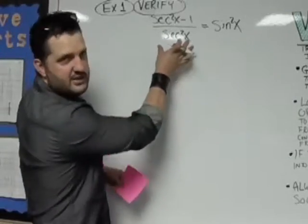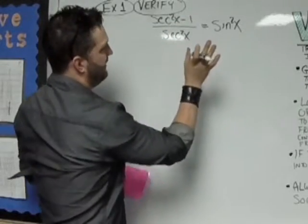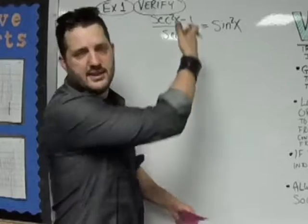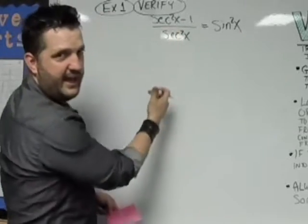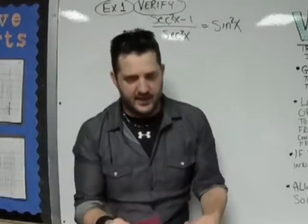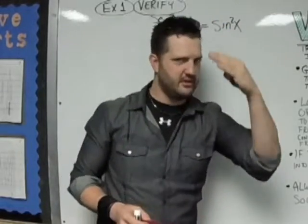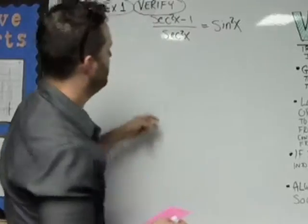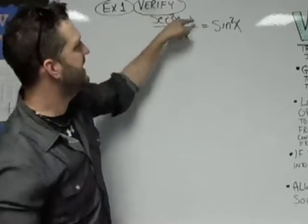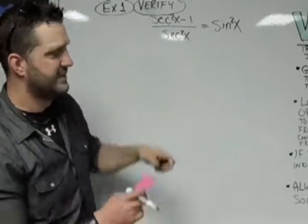On this one, what we have is we have a fraction on the left side, and we have equal sine squared x. So I'm going to work down the left side each time, drawing an arrow, and when you're verifying, you're going to have to be able to justify each step along the way, why we're able to turn this into this. So the first thing is we've got secant squared x minus 1 over secant squared x.